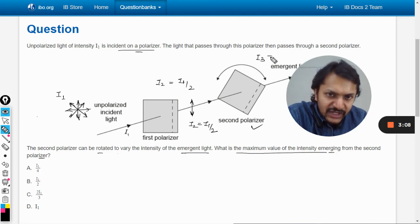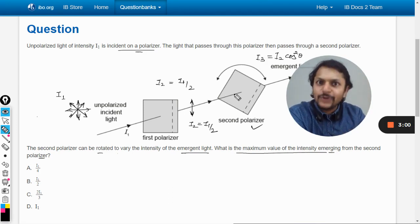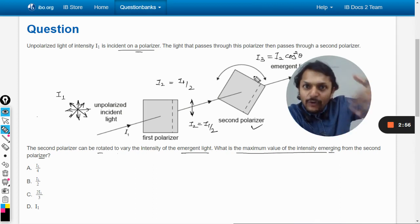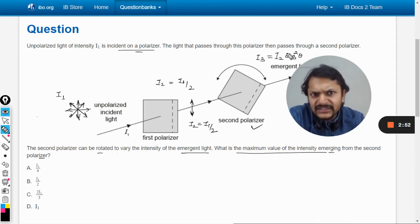I'm calling the output I₃. According to Malus's law, I₃ equals I₂ cos²θ. I₂ is the intensity incident on the second polarizer, I₃ is the intensity going out. Now we want to maximize this.